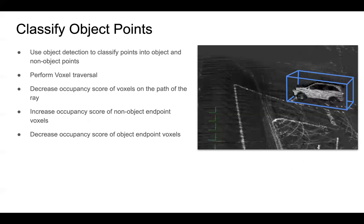In the object classification stage, we detect objects using a deep learning based object detection method. We extract the frames which consist of moving objects and classify the object points inside the bounding boxes as object points and outside as non-object points. We perform voxel traversal from the sensor origin to the object points and decrease the occupancy score of all voxels along the path of the rays to the object points, including the voxels containing the endpoints, since we already know from object detection that these points belong to a moving object. For non-object points, we follow the same process but increase the occupancy score of the endpoint voxels.